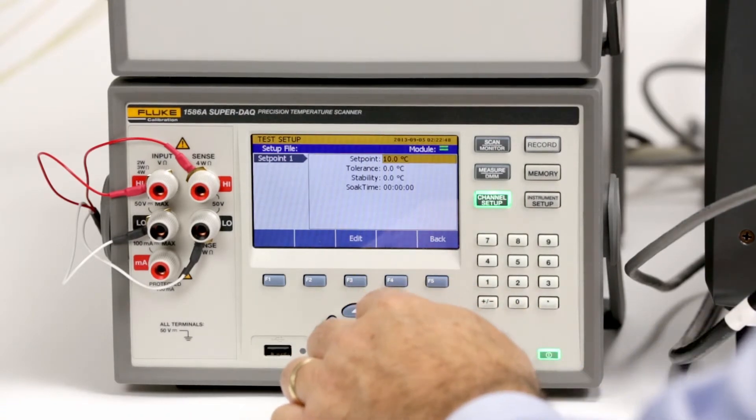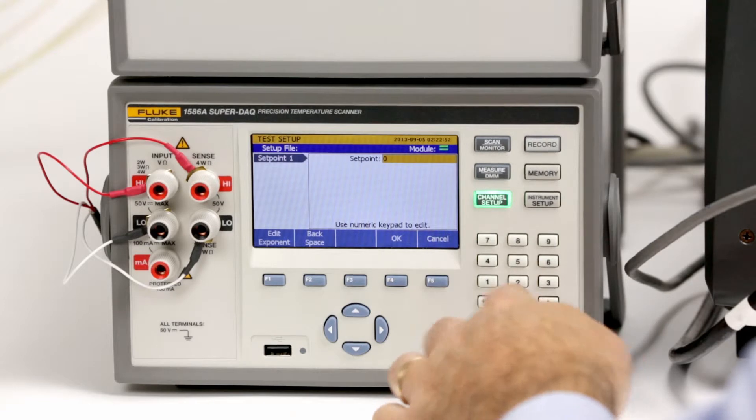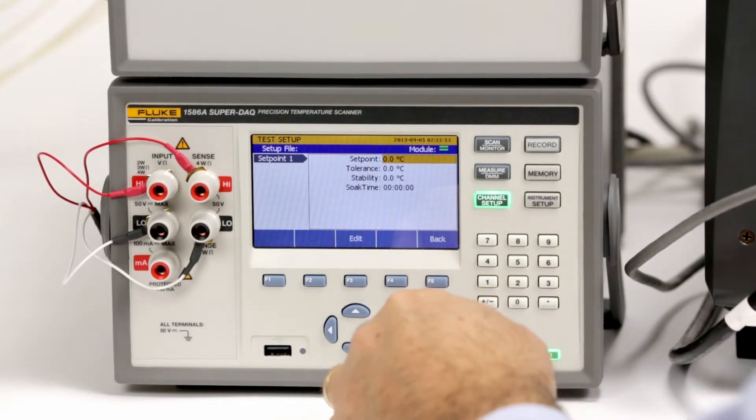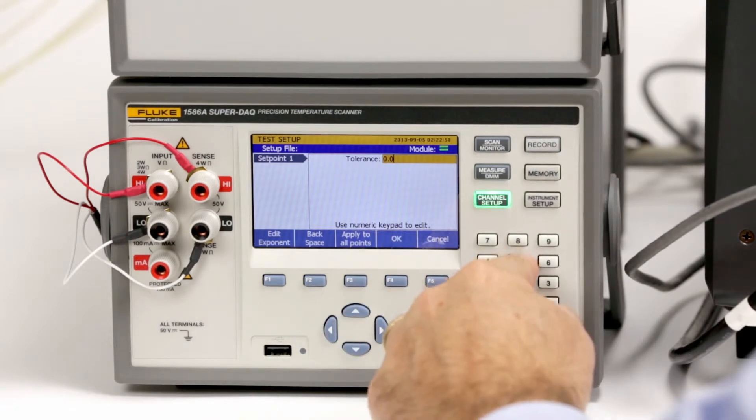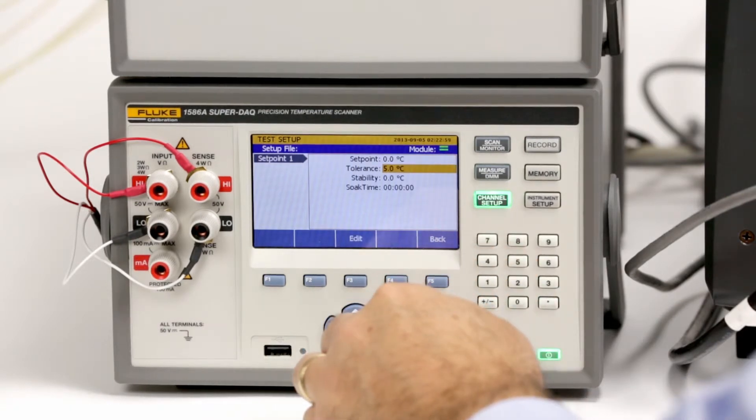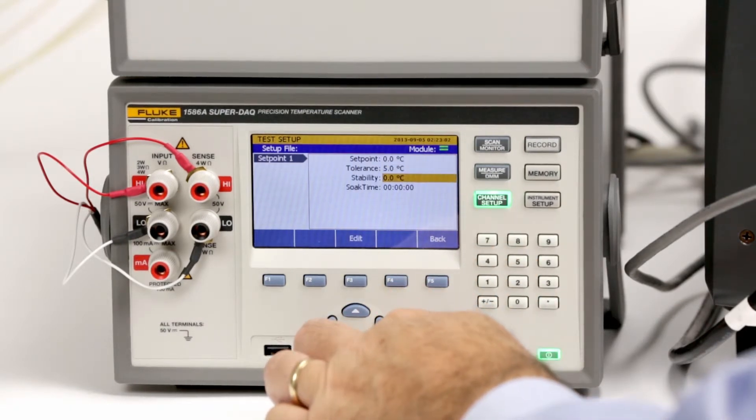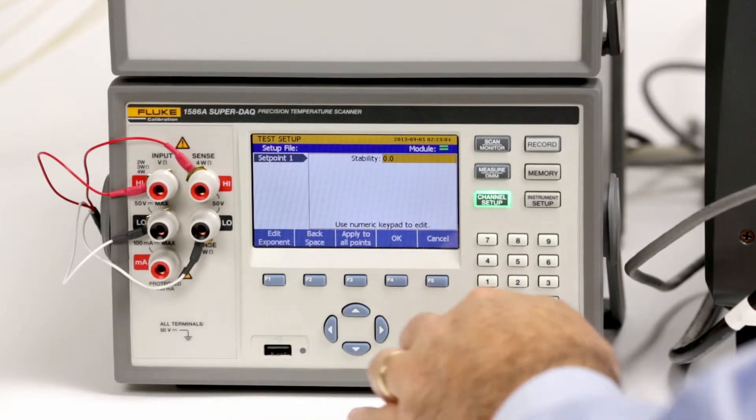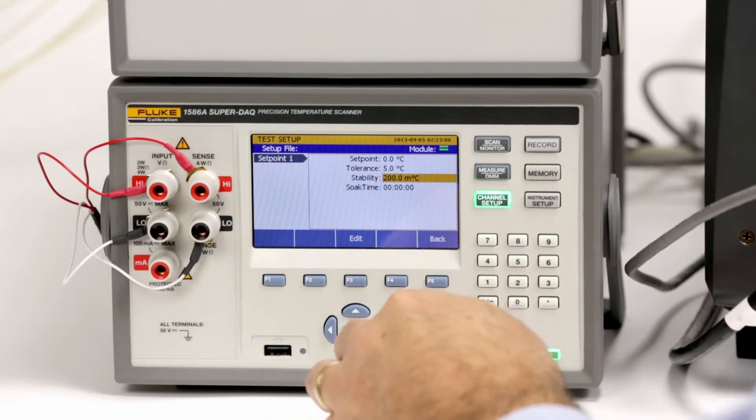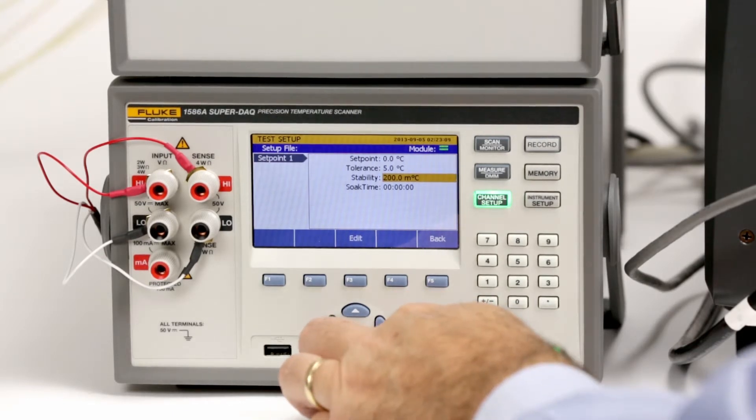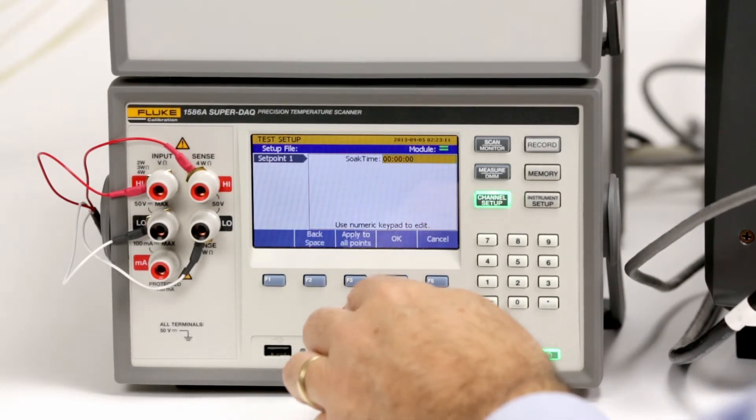Select set point 1 and enter set point temperature 0 degrees C, tolerance 5 degrees C, stability 0.2 degrees C, and soak time 5 minutes.